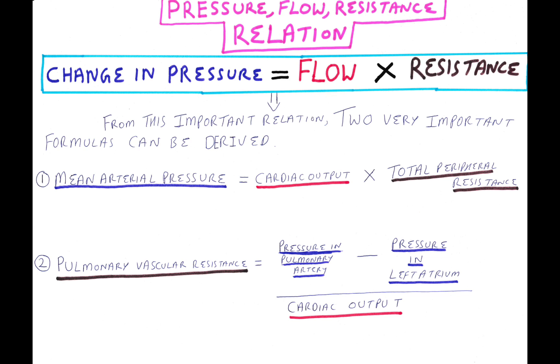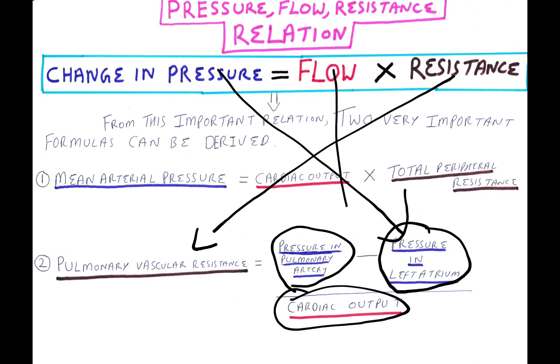So what is the formula of pulmonary vascular resistance? Pulmonary vascular resistance equals pressure in pulmonary artery minus pressure in left atrium, divided by cardiac output, which is flow.